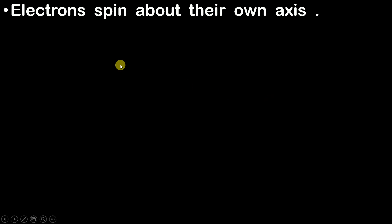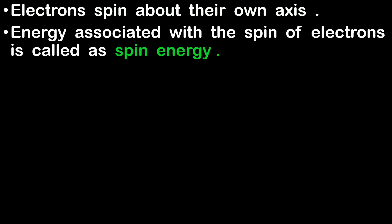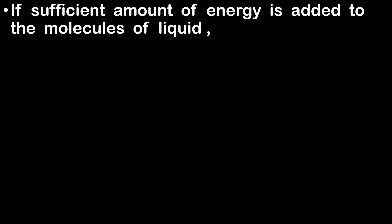The fourth microscopic form of energy: we all know that electrons spin about their own axis. If they are able to spin, they obviously have some energy. The energy associated with the spin of electrons is called spin energy.